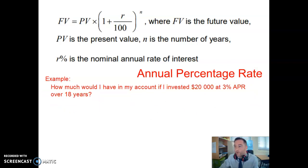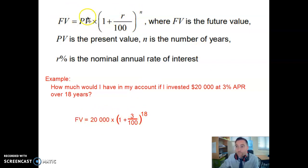I want to know how much is in my account after those 18 years. So all I need to do is substitute into this formula. We have our PV, our present value or our principal amount, is $20,000. Then I've got 1 plus 3 over 100 because my interest rate is 3%, and then the number of years is 18.